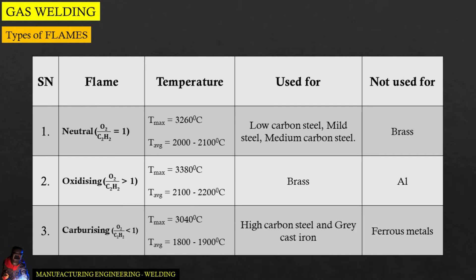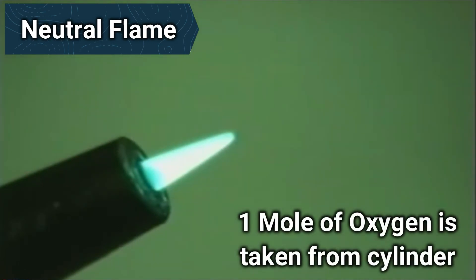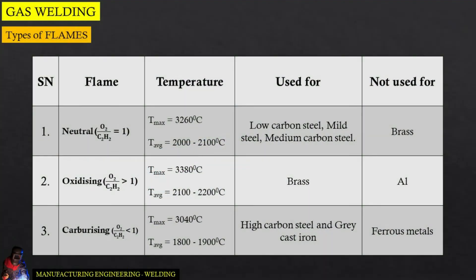In case of neutral flame, the oxygen to acetylene ratio is equal to 1, which means one mole of oxygen is used or fetched from the oxygen cylinder. The maximum temperature is 3260 degrees Celsius and the average temperature lies between 2000 to 2100 degrees Celsius. Neutral flames are used for low carbon steel, mild steel and medium carbon steel welding processes.